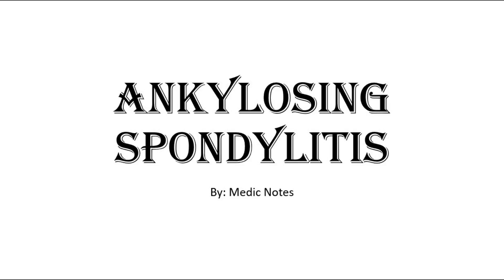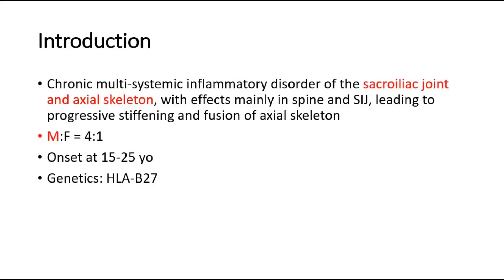Welcome back to another video of MedicNotes. This video will be on ankylosing spondylitis. It is a chronic multisystemic inflammatory disorder which mainly involves the sacroiliac joint and axial skeleton, leading to progressive stiffening and fusion of the axial skeleton. It mainly affects males compared to females, where the ratio is around 4 to 1. Onset is usually at 15 to 25 years old, and it is strongly associated with genetic factors such as HLA-B27.